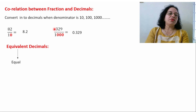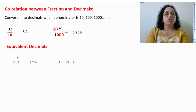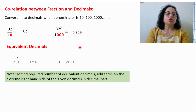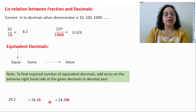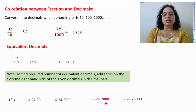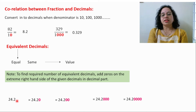Now, equivalent decimals. Equivalent means equal — the value is the same. Such decimals are known as equivalent decimals. To convert into equivalent decimals, we add zeros after the decimal on the extreme right-hand side. For example, 24.2 — you can add one zero: 24.20. The value is the same. You can add two, three, or four zeros; the meaning remains the same. After the decimal on the extreme right-hand side, adding zeros does not change the value. Such decimals are known as equivalent decimals.